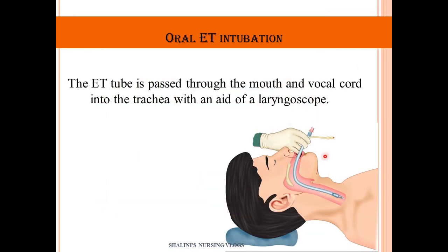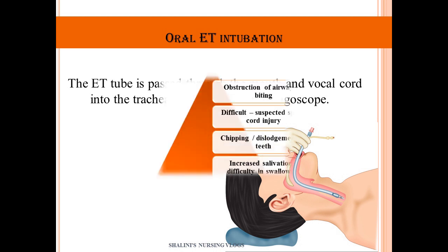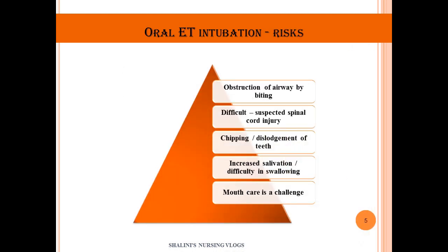In oral intubation, the ET tube is passed through the mouth and the vocal cords and enters into the trachea. This is done with the help of a laryngoscope. The risks of oral ET intubation include obstruction of the airway due to biting, difficulty in cases of suspected spinal cord injury, dislodgement of the tube, increased salivation, difficulty in swallowing, and mouth care post-intubation is also a concern.